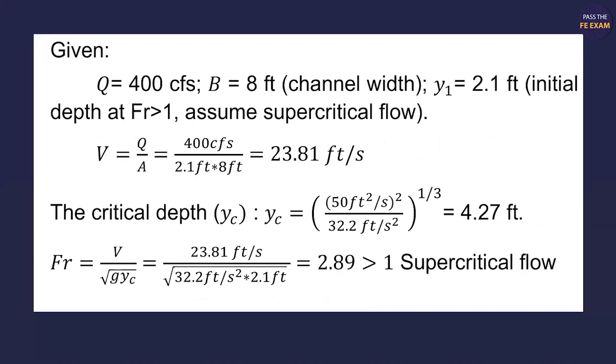So in this problem statement, we were given the following: the flow of 400 cubic feet per second, the channel width at eight feet, and the critical depth at one foot deep. We're assuming that's supercritical flow, and that depth is 2.1 feet. Again, these are all given in the problem statement. You can calculate the velocity using what was given, and you will get 23.81 feet per second.